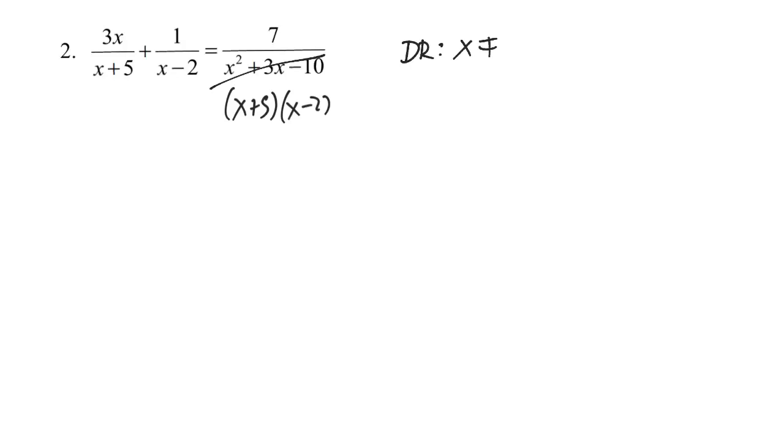So now I'm ready to identify my domain restrictions. Looking at my denominators, if I have x plus 5, that means x cannot equal negative 5. And if I have x minus 2, that means x cannot equal positive 2. Okay, so now that we've got that, we're ready to multiply this entire equation by both of these denominators, x plus 5 and x minus 2.